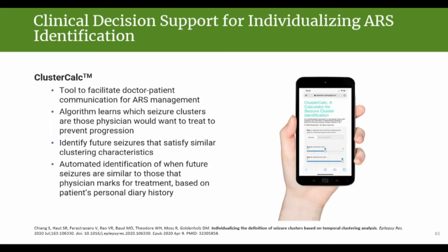The Seizure Tracker data is unique in that we collect timestamps, dates, and lengths of seizures — three data points that allow us to evaluate data differently than what's commonly done with just seizure counts. We're evaluating how seizures cluster together, and with some current rescue medications prescribed for acute repetitive seizures, they had a set definition of what seizure clusters looked like. We set out to create what we call Cluster Calc, using time and date stamps and seizure lengths to define what a cluster looks like individually, so you can have better discussions with your physician about when to use rescue medications within a seizure cluster.